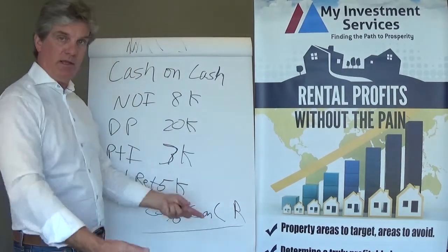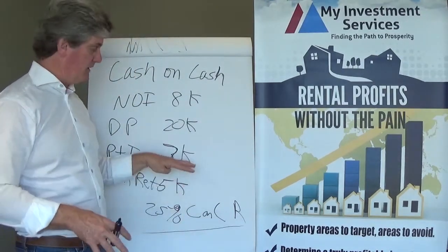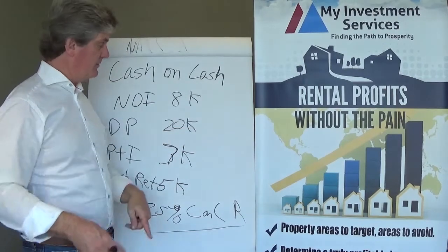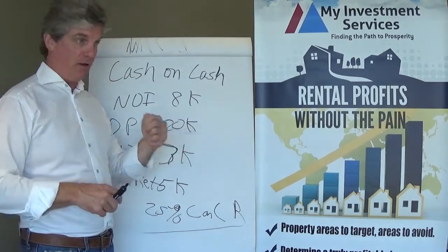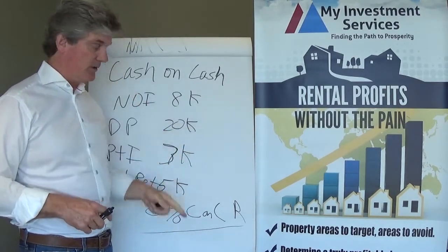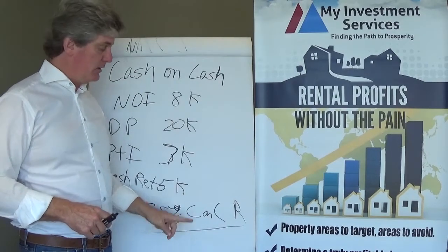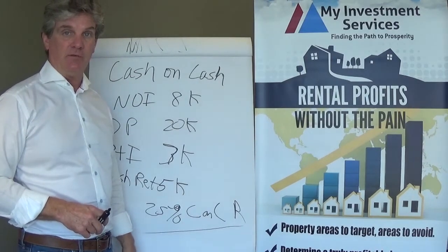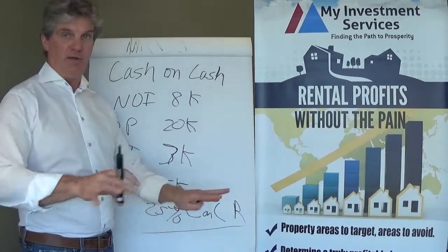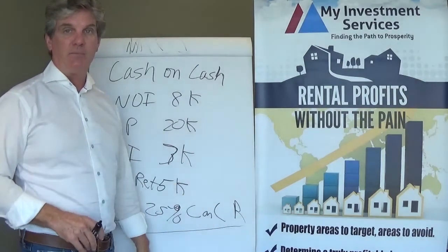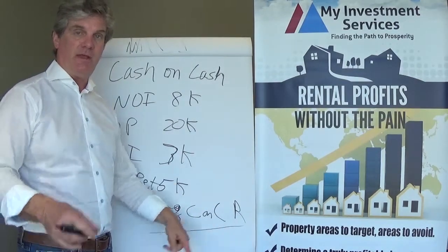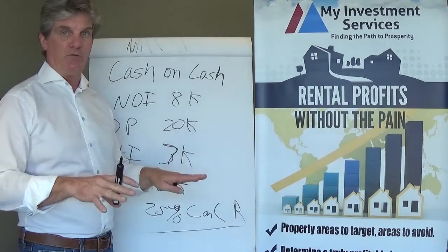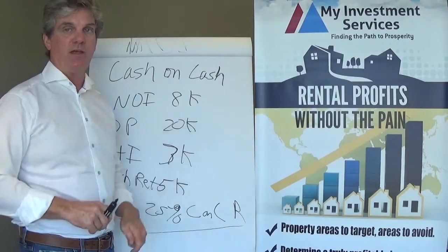You take what's in your pocket after your debt service and all expenses, divide that by what you put into the property up front, and that's your cash on cash return. Now you still have to pay income tax on that — this just includes debt service. The big difference: cap rate does not account for debt service; cash on cash return does. Cap rate you really don't manipulate too much; cash on cash return you do.